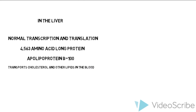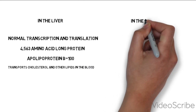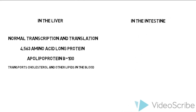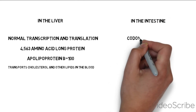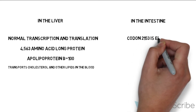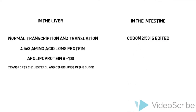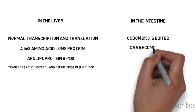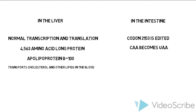However, when this gene is expressed in the intestine instead of the liver, one specific codon — codon 2,153 — which reads CAA and would normally translate the amino acid glutamine, is modified by cytidine deaminase to UAA.